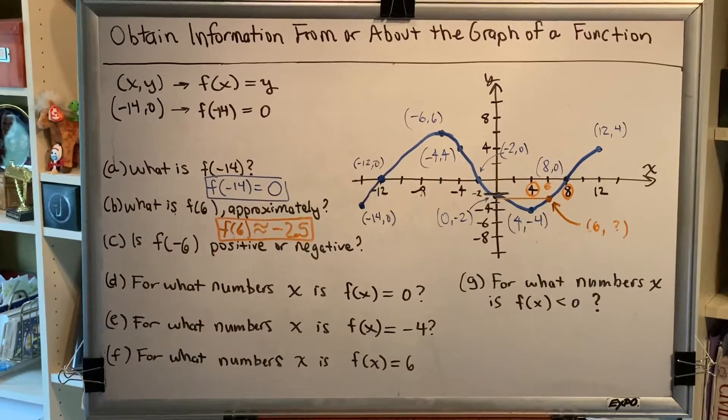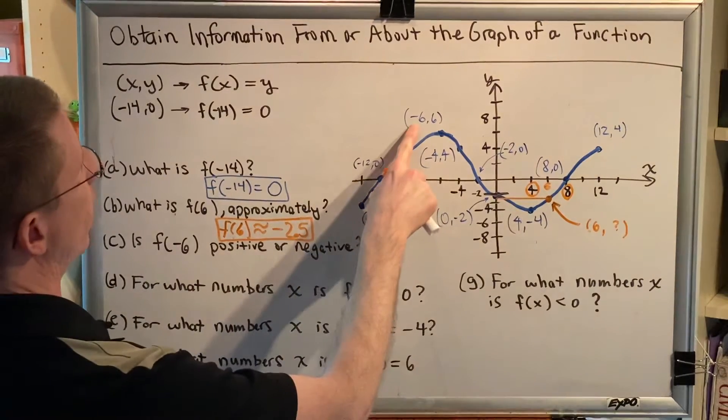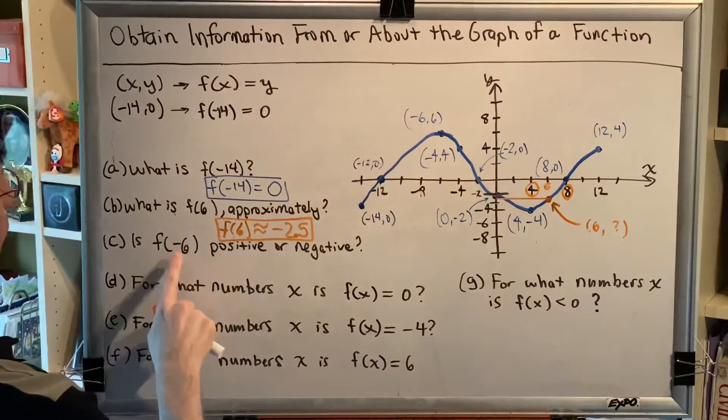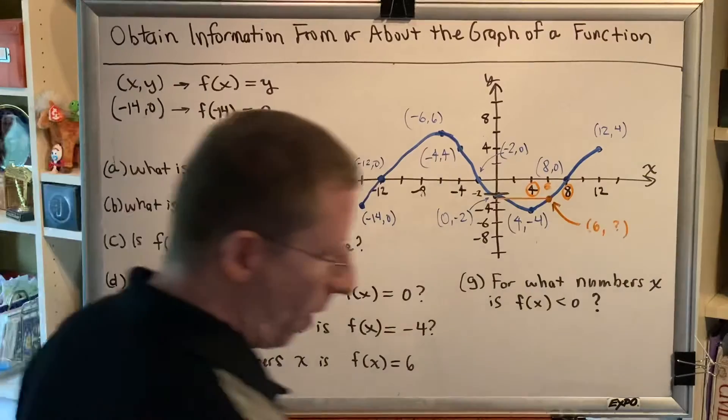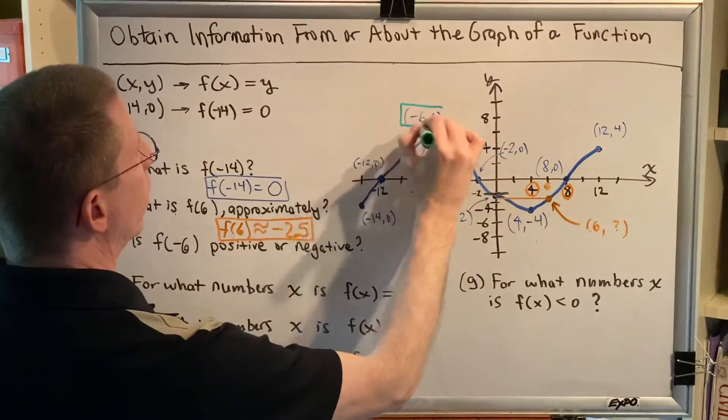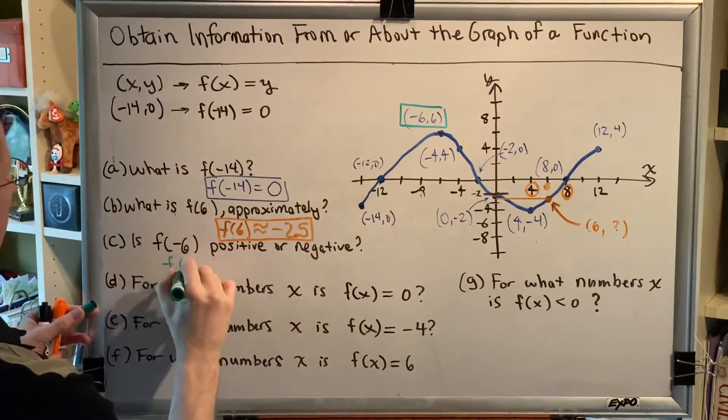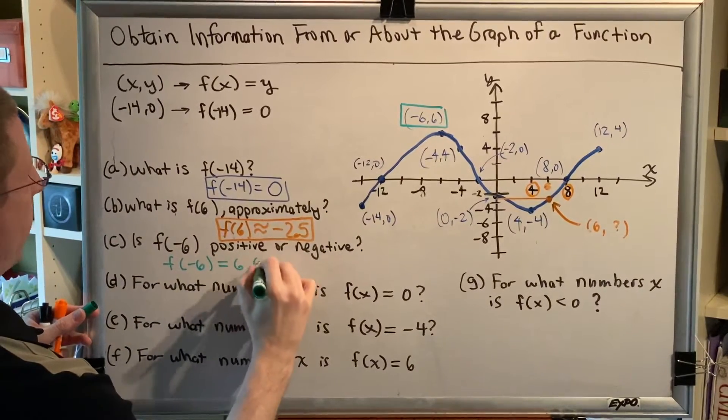Let's move on to our next task. Is f(-6) positive or negative? So we find the point on the graph with an x-coordinate of negative 6, which is right here. f(-6) would be the y-coordinate, which is 6, and 6 is positive. So the answer is positive. We know that f(-6) is equal to 6, which is positive.